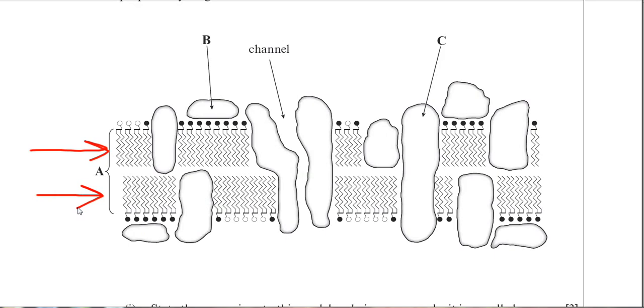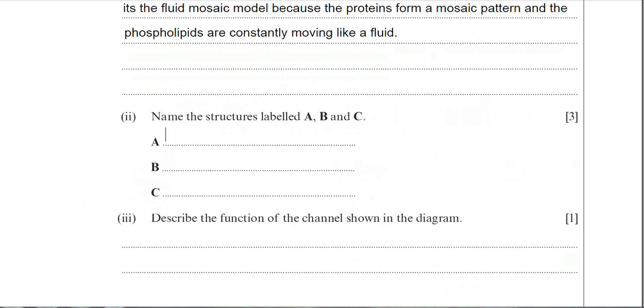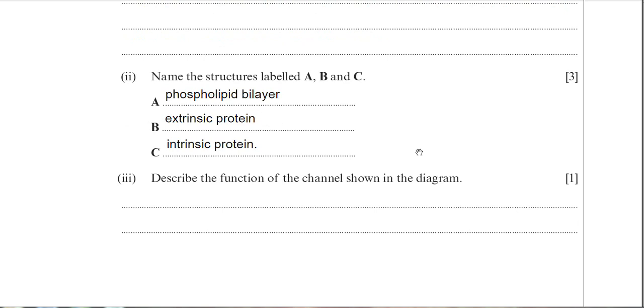B is an extrinsic protein, and C would be either an intrinsic protein, you could have said, or actually carrier protein or transmembrane protein will be acceptable for that. So a number of options for protein C there. Let's type those answers in. There you go. So A, phospholipid bilayer. B, extrinsic protein. And C, I've decided to go for intrinsic protein.